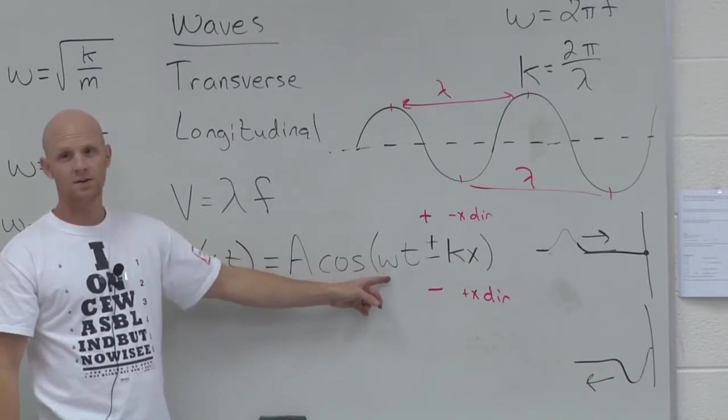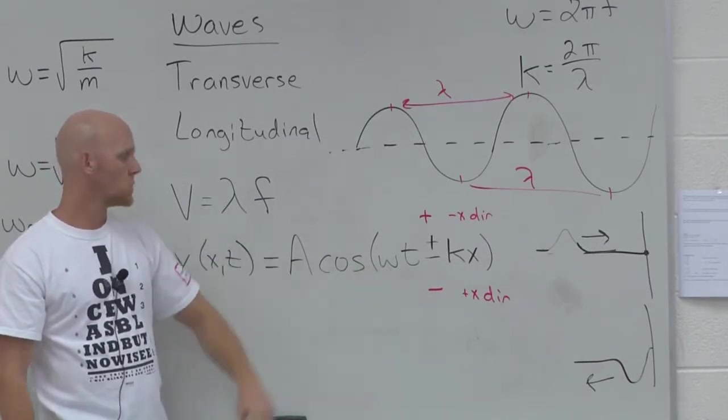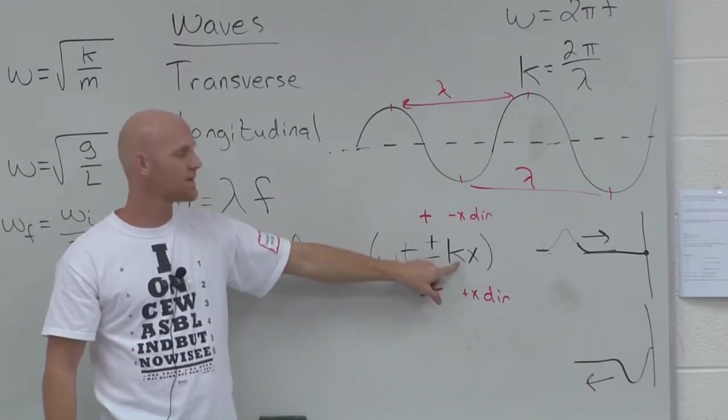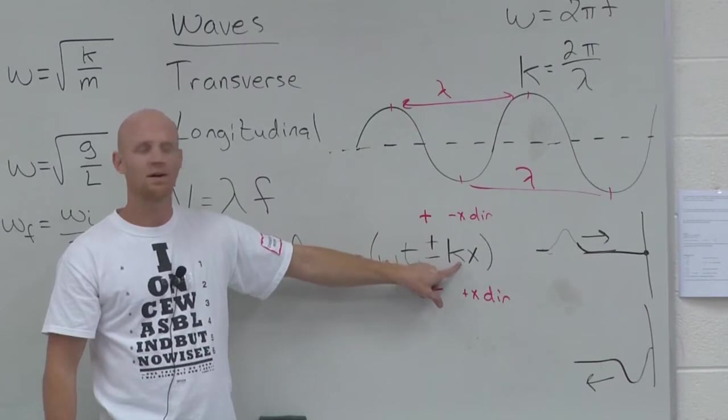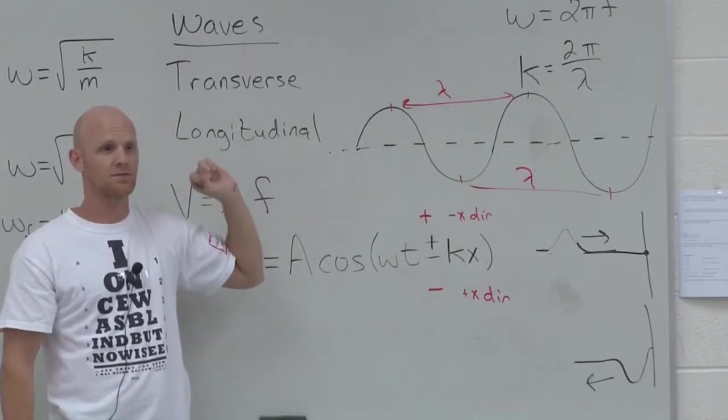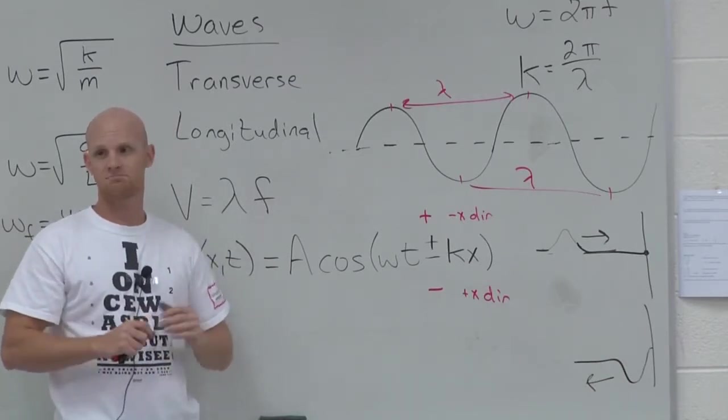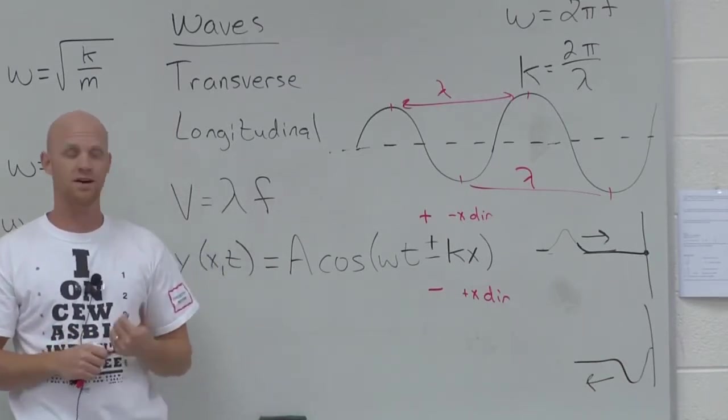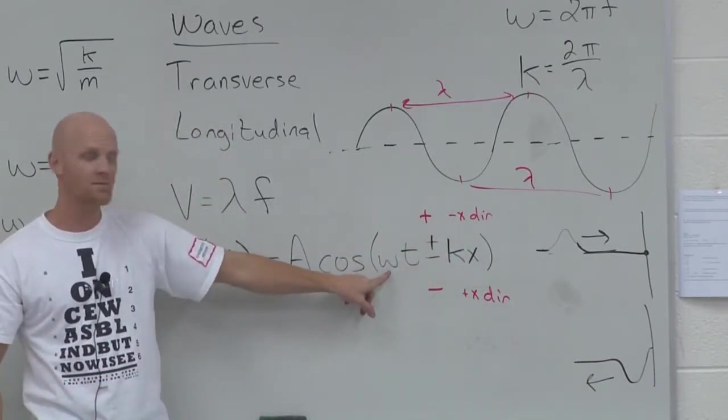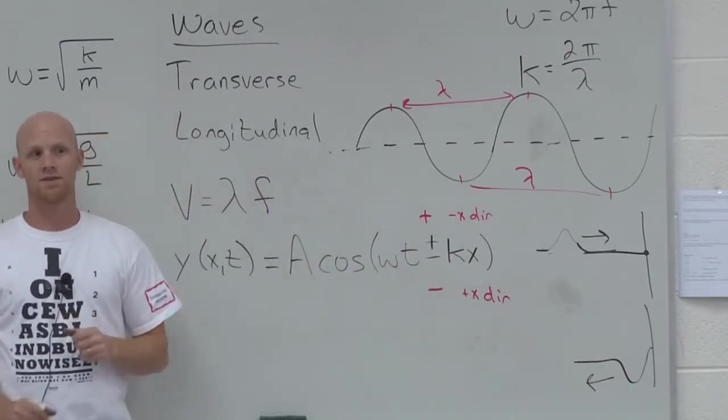Notice from omega you can still find the frequency, you can still find the period. But from k, what additional thing can we solve from whatever numerical value k has? You can get the wavelength. That's the one new thing you might solve for in this case. Nothing else has changed. You don't need any of this part of the term to get the frequency and the period. That's all going to come from omega. But k, you will use to get the wavelength.